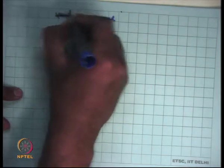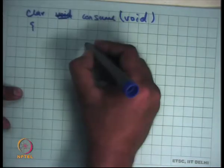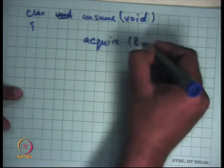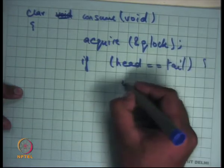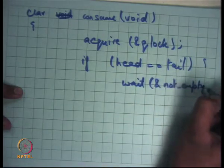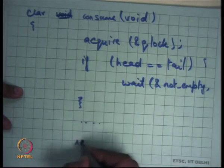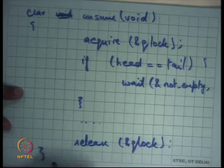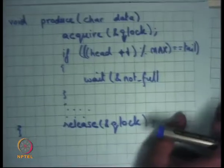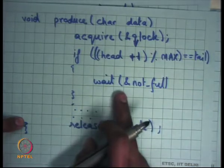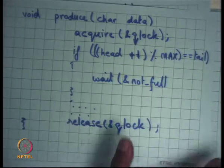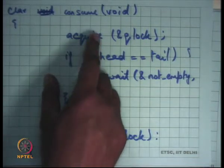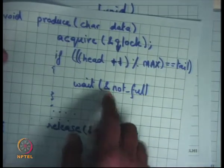One option: call release before wait, then reacquire after wait. But there is a problem: releasing the lock and actually going to wait are not atomic with respect to each other. The producer finds the queue full, releases the lock, and is just about to go to wait. Before he goes to wait, the consumer comes in, consumes an element, and signals `not_full` — but that signal is wasted.